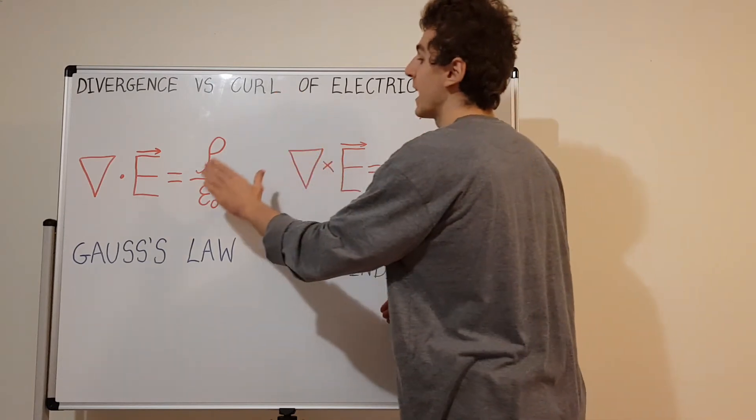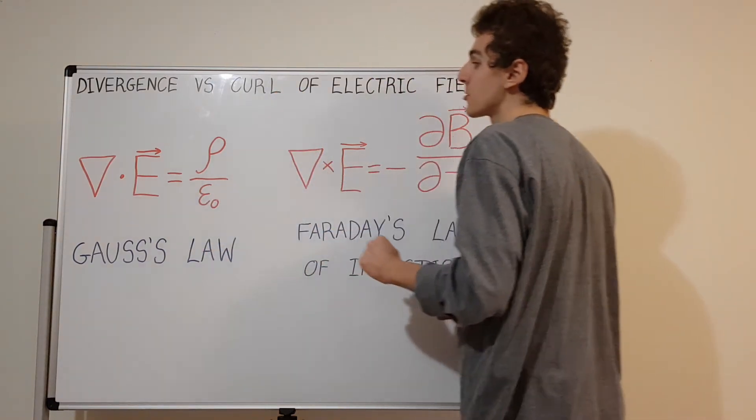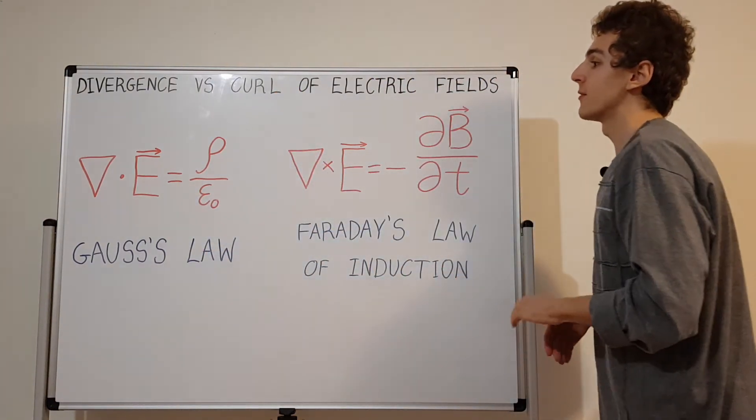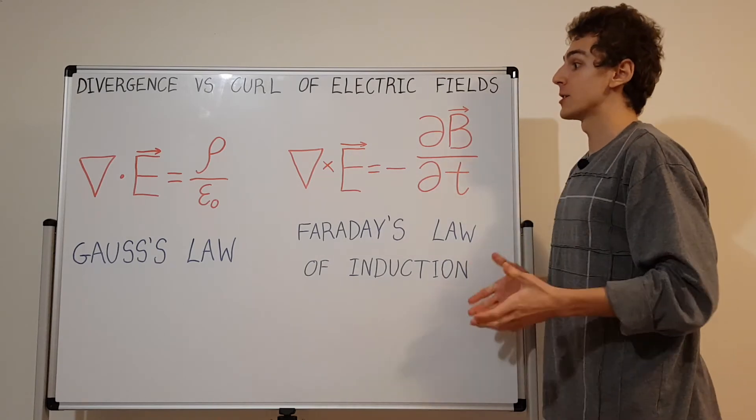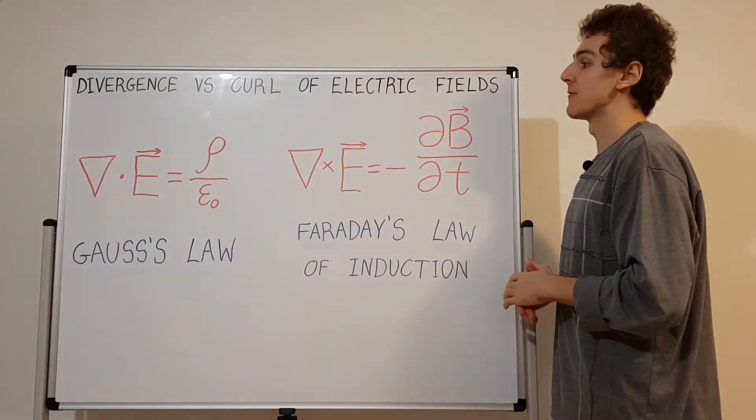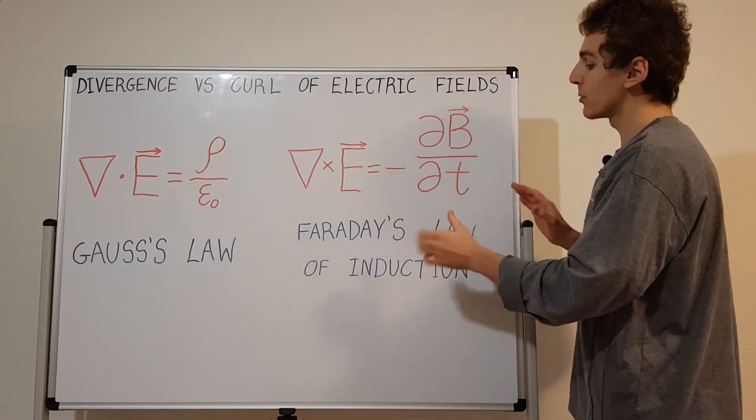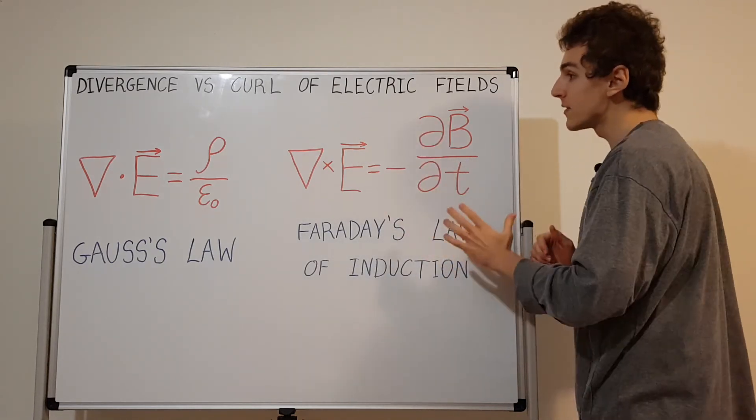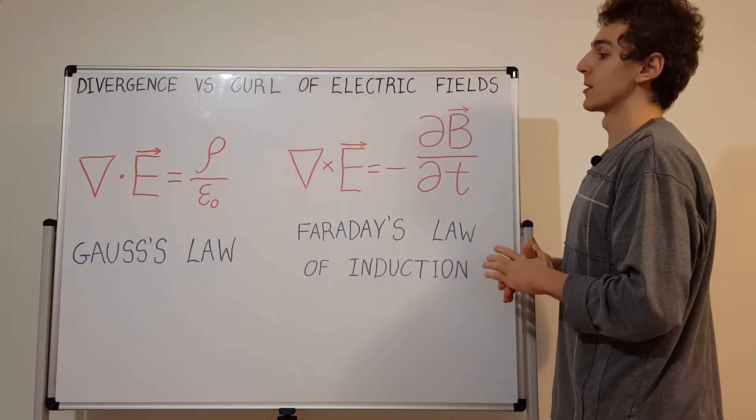Whereas if you want to have a divergence of zero for the electric field, you cannot have any charges. That's actually the case in a vacuum or in free space. There's no charges in a vacuum. Those are some of the properties of the curl of the electric field and the divergence of the electric field.